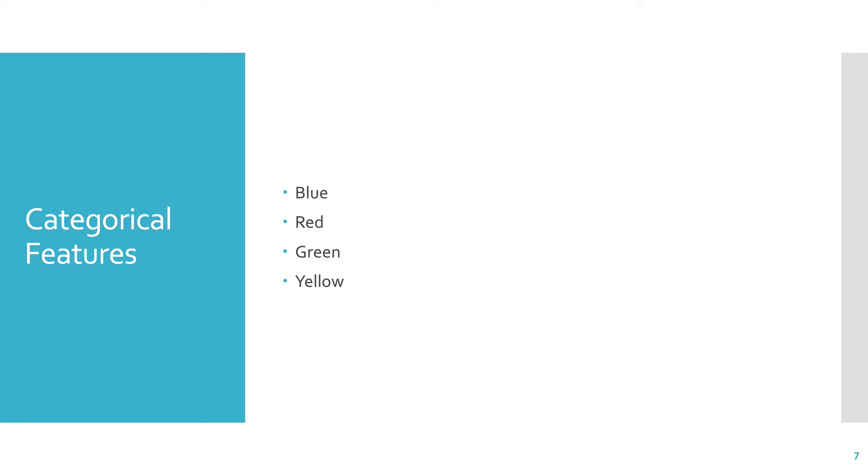Categorical features need to be translated to values as well. If we have color features like blue, red, green, and yellow, we could represent these as numbers. If we use 0, 1, 2, and 3 to represent them, that could work. But if we do that, then we're saying that blue is closer to red than it is to green. But this isn't something that we really want to say.